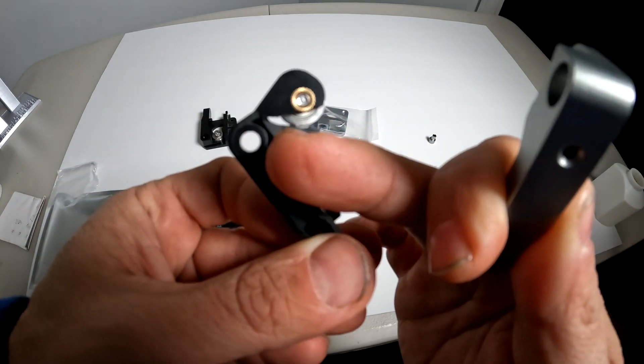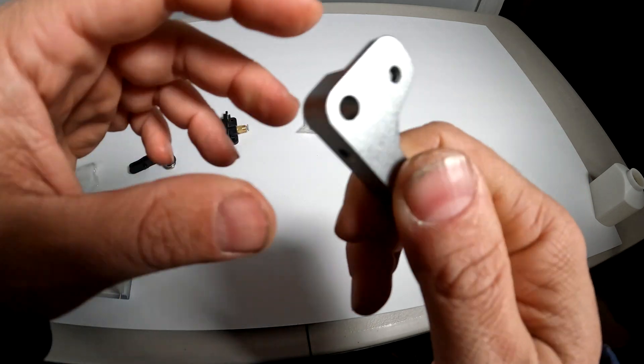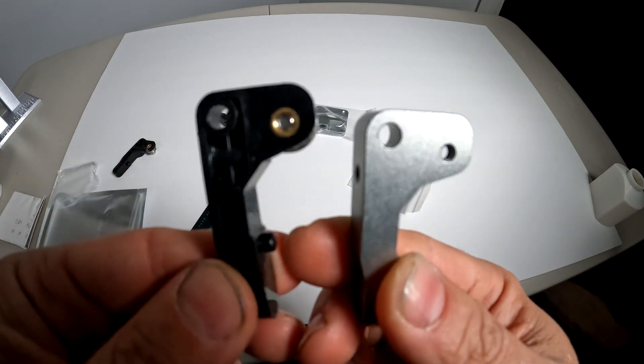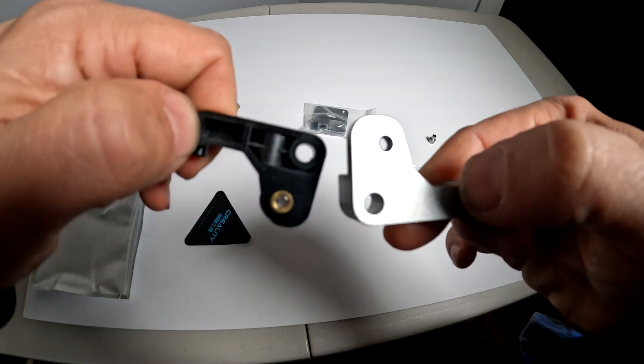This is the broken section on the plastic extruder and this is what it looks like on the metal one and of course this is what it looks like on an intact non-broken plastic one.